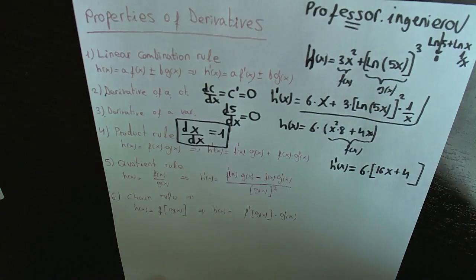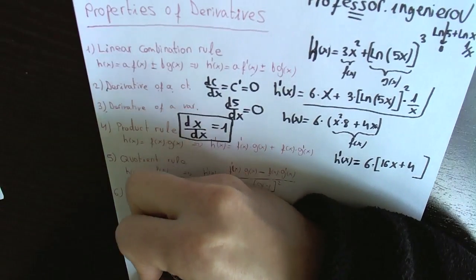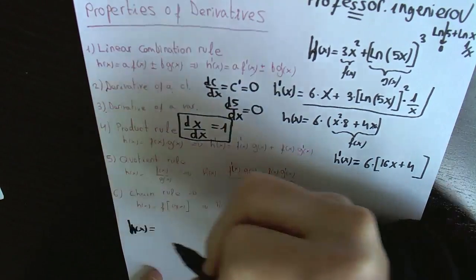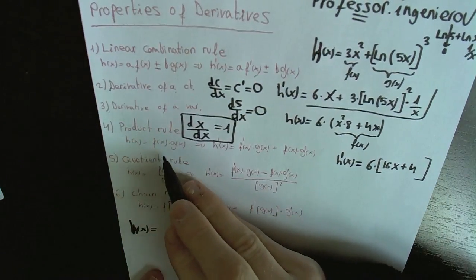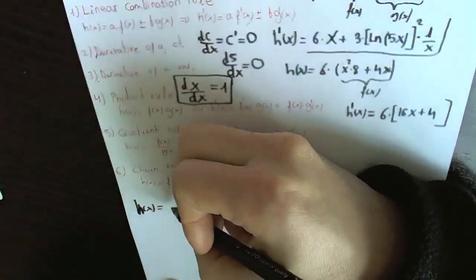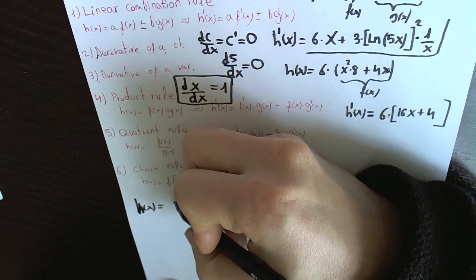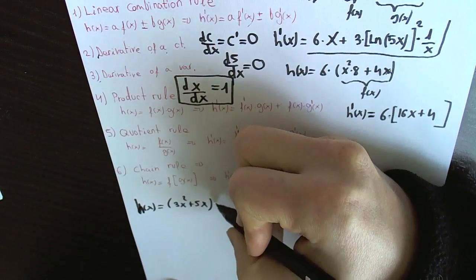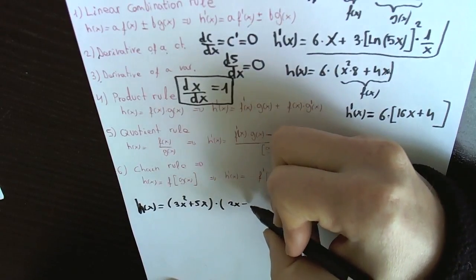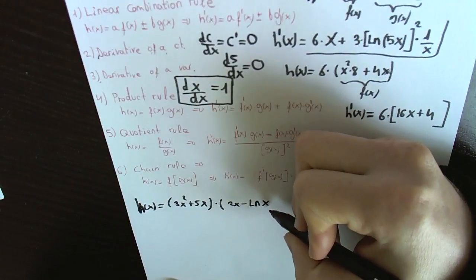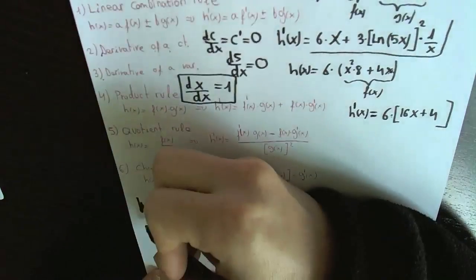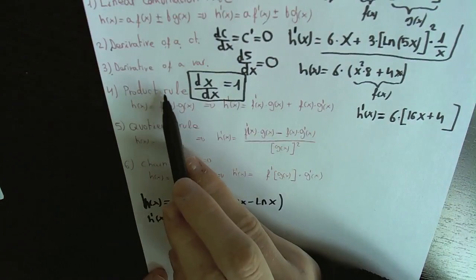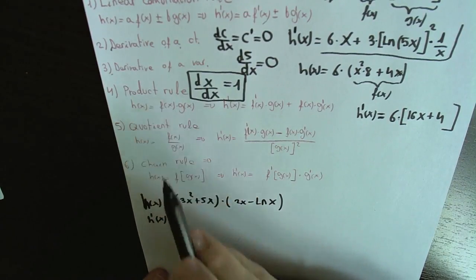Now let's go to the fourth rule: the product rule. If we have this function h(x) equal to 3x squared plus 5x, all multiplied by 2x minus logarithm of x, we need to apply the product rule. We identify the two functions: f(x) is 3x squared plus 5x, and g(x) is 2x minus logarithm of x.